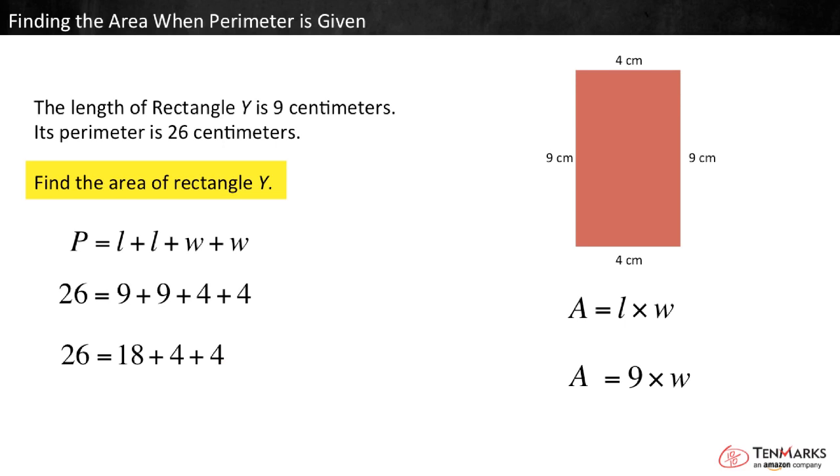Can we find the area now? We can! W equals 4. So, area equals 9 times 4. The area is 36 centimeters squared.